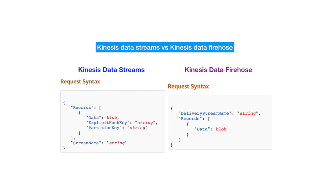Let's dive a little deeper. For Kinesis Data Streams, when writing data into the streams, we need to provide the stream name as well as a set of records. Each record has three parts: data, explicit hash key, and partition key. On the other hand, for Kinesis Data Firehose, the record has only one field, which is data.